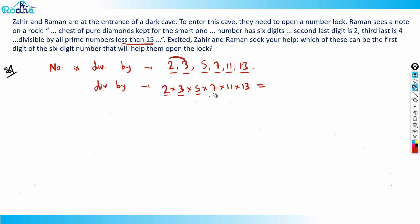So that is equal to how much? 2 into 3 is 6, times 5 is 30, times 7 is 210, 210 into 143, that is equal to 30030. So it should be divisible by 30030. That means the last digit of the number must be zero.